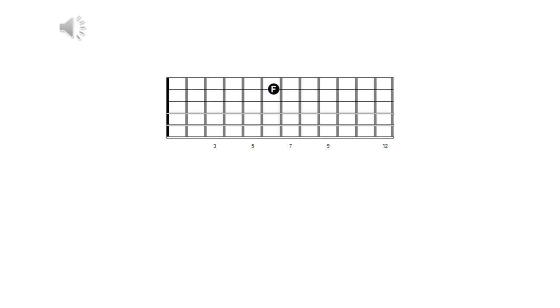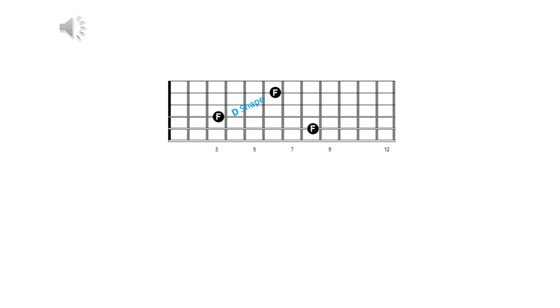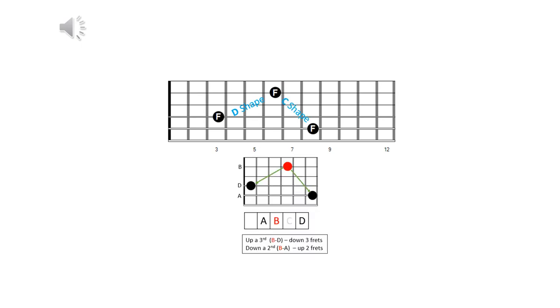Take a look at this diagram. Can you name the two shapes that share the root F? If you said the two shapes are D and C, you're right. When we count up a third from the string letter B to the string letter D, our identical root is three frets below, giving us the D shape. When we count down a second from B to A, however, our identical root is two frets higher in the C shape.